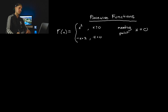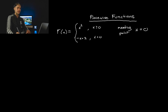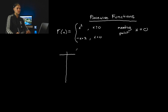In this particular example, just because we're starting out, there's only one meeting point: x equals zero. So to the left of zero it's this function, to the right of zero it's this function. What I like to do is make a table of values for both of these with their respective domains.